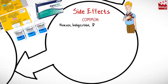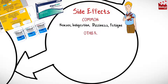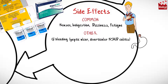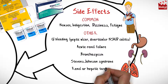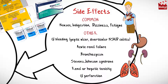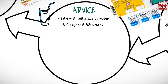Common adverse reactions of naproxen include nausea, indigestion, dizziness, and fatigue. Other adverse reactions that may occur include gastrointestinal bleeding, acute renal failure, bronchospasm, Stevens-Johnson syndrome, renal or hepatic toxicity, and gastrointestinal perforation.